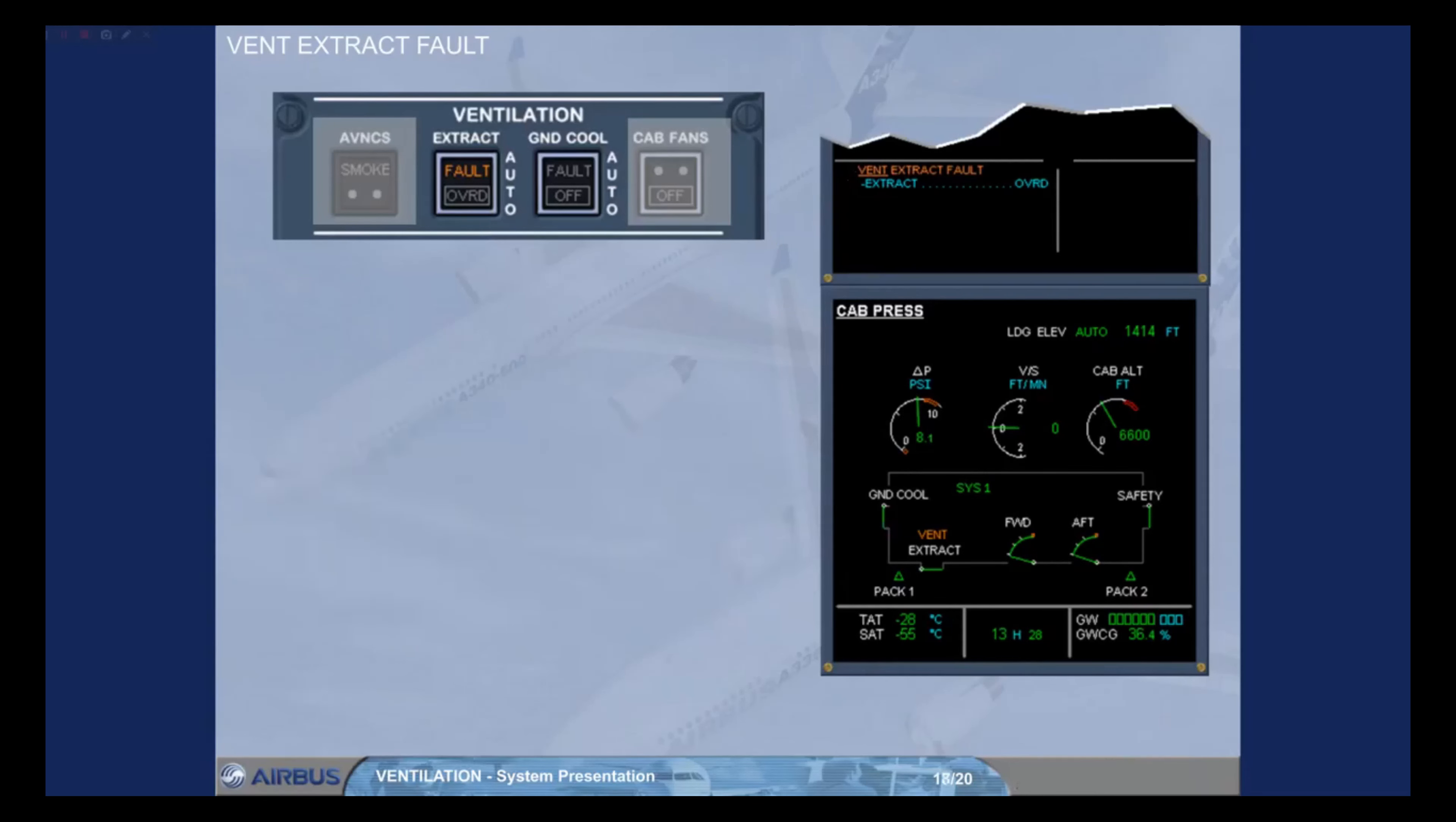The ECAM actions have now to be performed. In the case of a ventilation extract fault, the procedure is to select the override extract push button switch located on the ventilation panel. When you switch to override, the amber fault light in the extract push button switch goes off and is replaced by the white override light, and the blue action line on the engine warning display disappears.